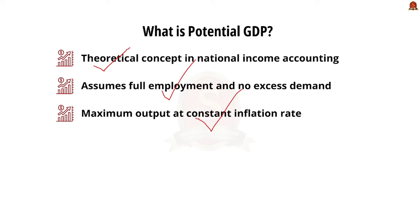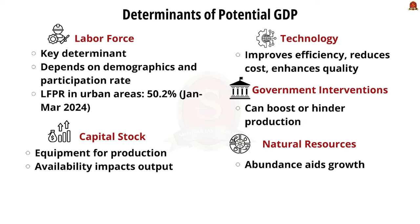The first determinant of potential GDP is the labor force — not just the quantity but also the quality and skill power. According to the Periodic Labor Force Survey, the labor force participation rate in urban areas is around only 50.2% as of March 2024. The next determinant is capital stock — the equipment which helps in production. The availability of capital decides the extent of economic output, and is a major reason why India has a high capital-to-output ratio.